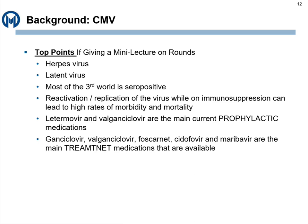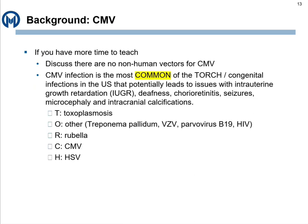Letermovir and valganciclovir, depending on your case scenario, are your main prophylactic medications. For treatment, you have ganciclovir, valganciclovir, foscarnet, cidofovir, and maribavir as your main treatment medications. These are data points you should be able to rattle off quickly. CMV has no non-human vectors. Pertinently, especially for medical students rotating between adult and pediatrics: CMV is unfortunately the most common of the TORCH organisms. TORCH refers to infections you can get while pregnant — toxoplasmosis, other (syphilis, VZV, parvovirus, HIV), rubella, CMV, and HSV.